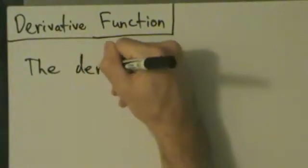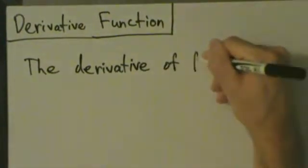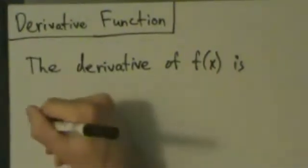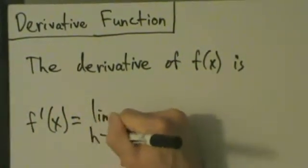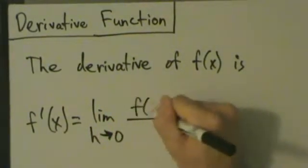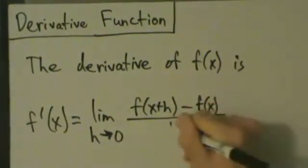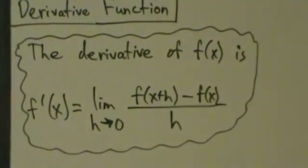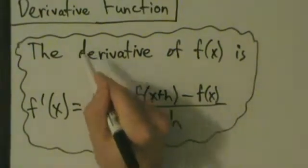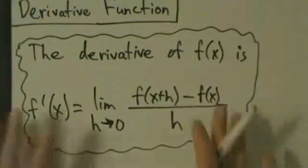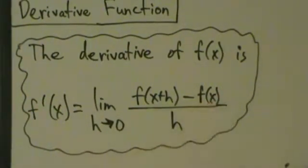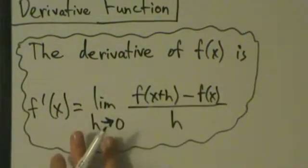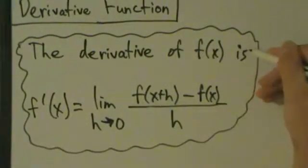Let's get the definition out of the way. The derivative of f(x) is f'(x) equals the limit as h approaches 0 of f(x+h) minus f(x), all divided by h. This is a very important definition. A few videos ago we had a similar definition, but that one was the derivative at a point x equals c. The only difference here is now we have x instead of c everywhere. We find the derivative as a function and then use it to find the derivative at multiple points.